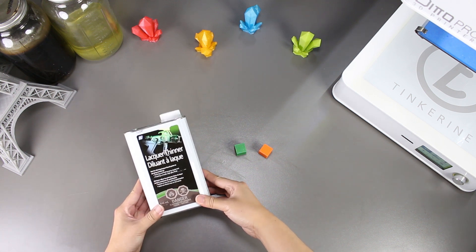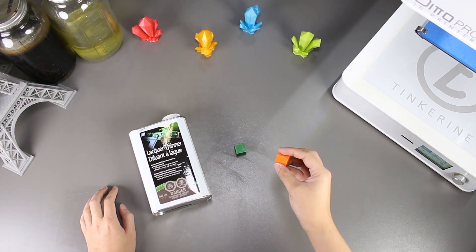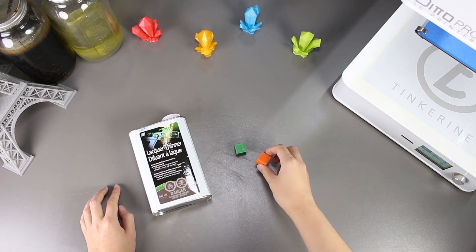Welcome to another episode of Tinkerine Experiments. In this episode, we will be trying to smooth out our PLA print with lacquer thinner.